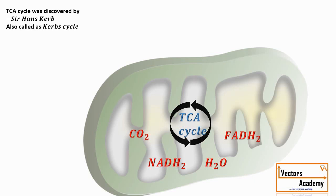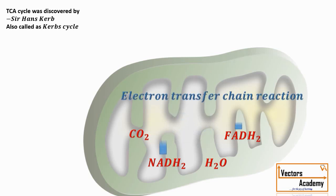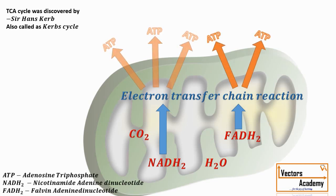The third step is the electron transfer chain reaction, also called the electron transport system. This takes place in the mitochondria, where NADH2 and FADH2 as assimilatory power enter the electron transfer chain reaction. One molecule of NADH2 synthesizes three molecules of ATP, and one molecule of FADH2 synthesizes two molecules of ATP. Water molecules are also synthesized in this reaction.